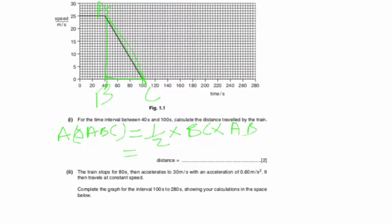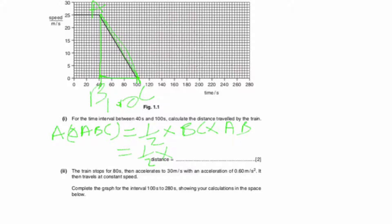Area of triangle ABC equals distance traveled, which equals half into BC into AB. The length BC equals 100 minus 40, because the full length is 100 and till the start point it is 40, so 100 minus 40.